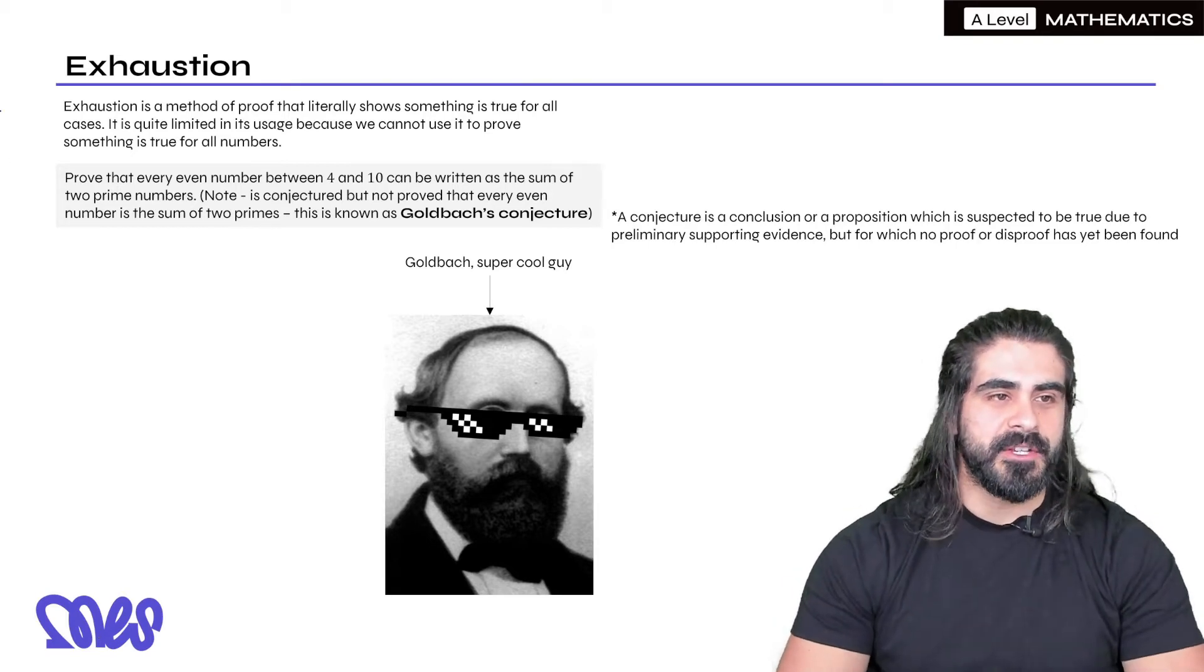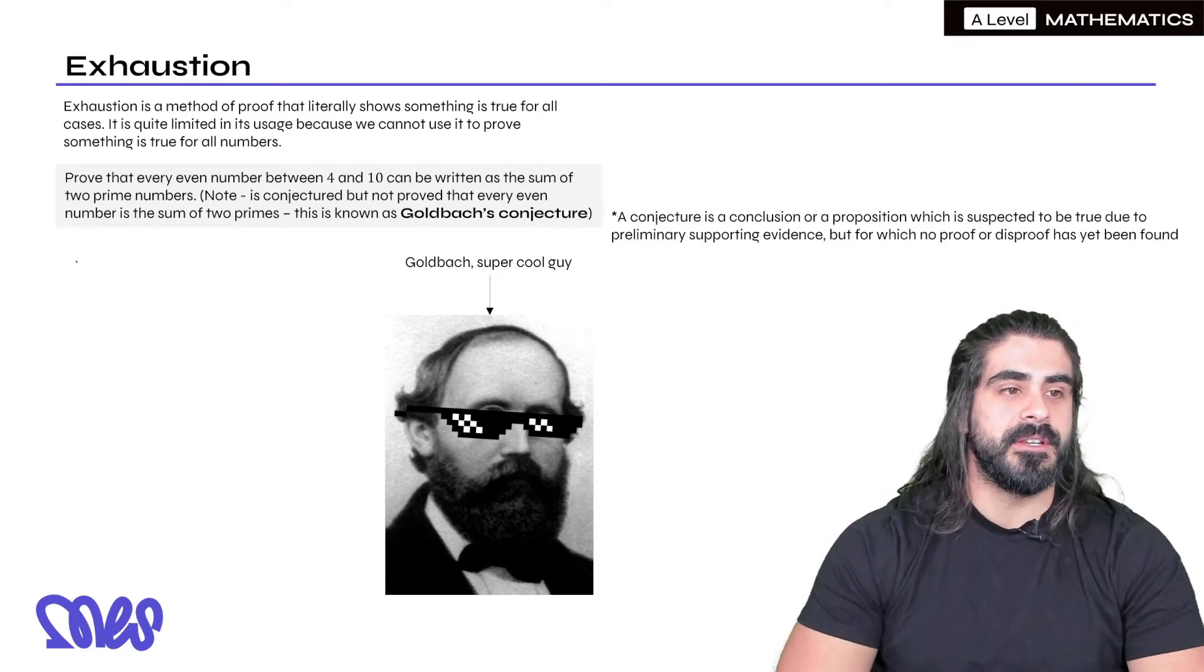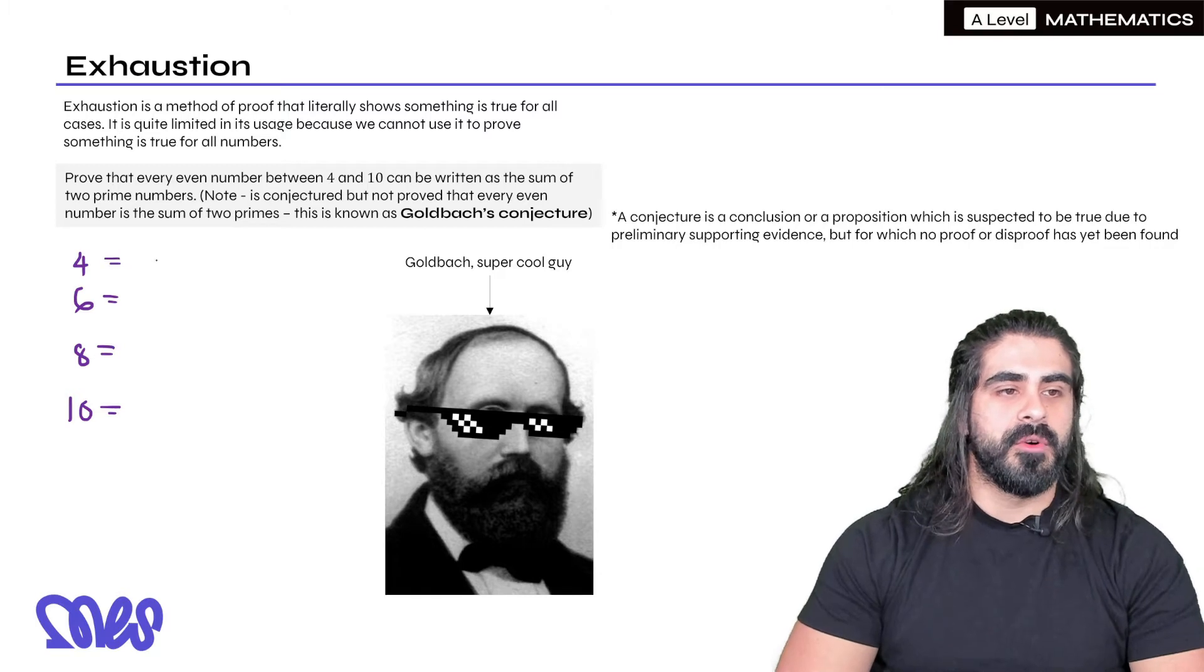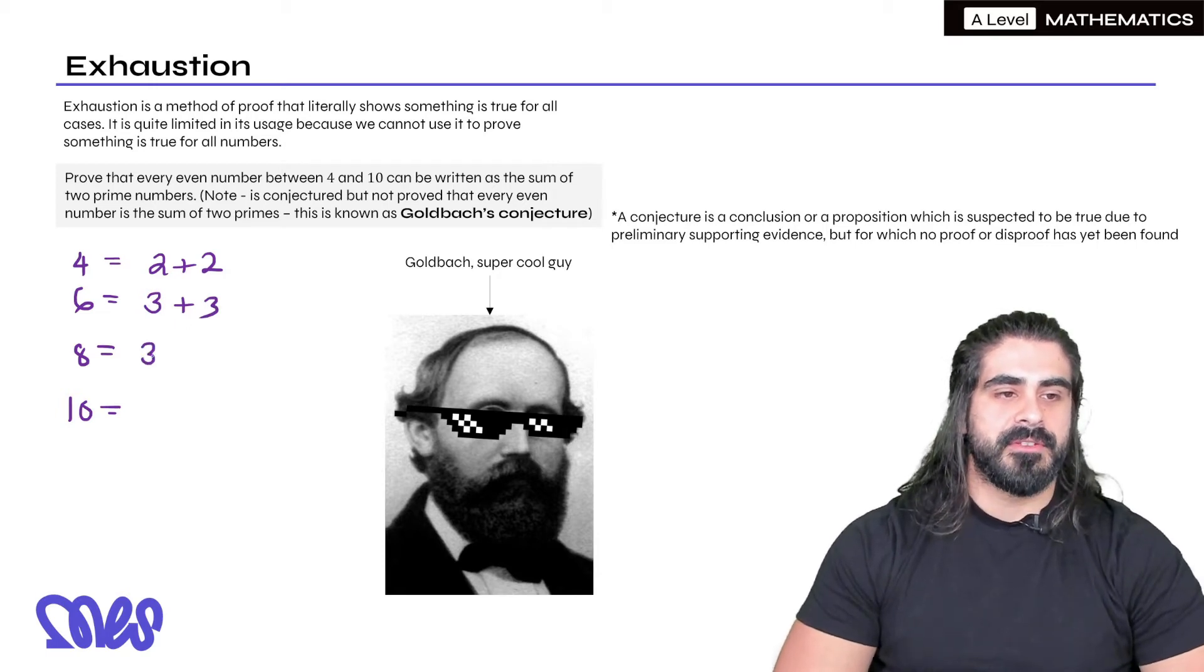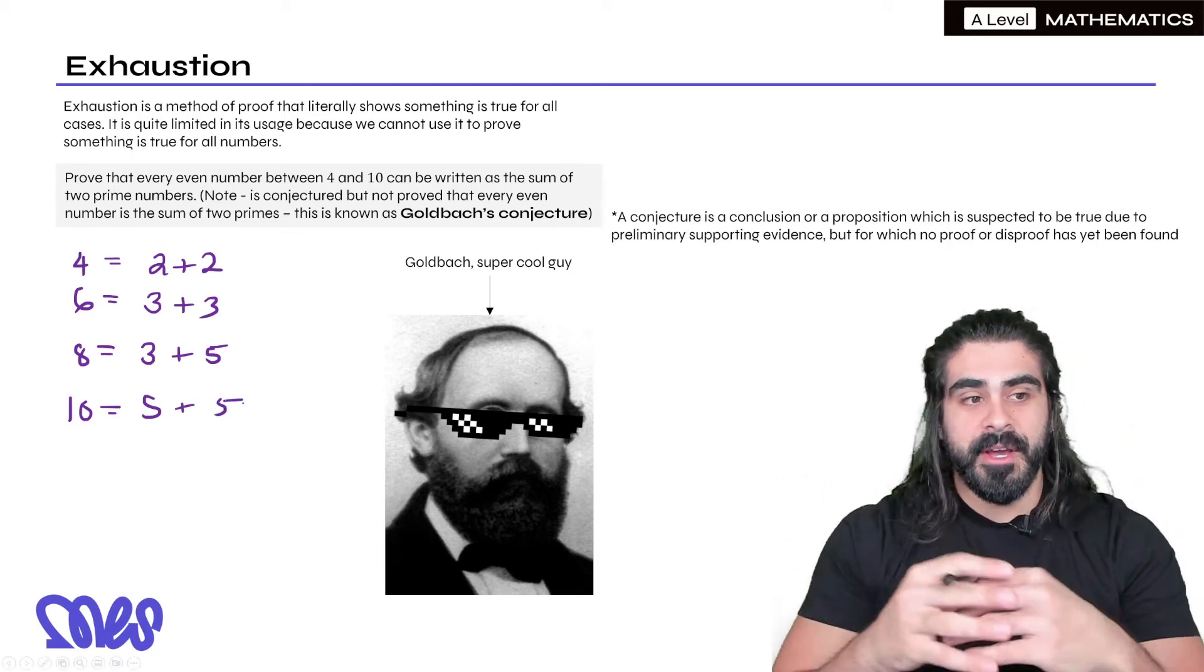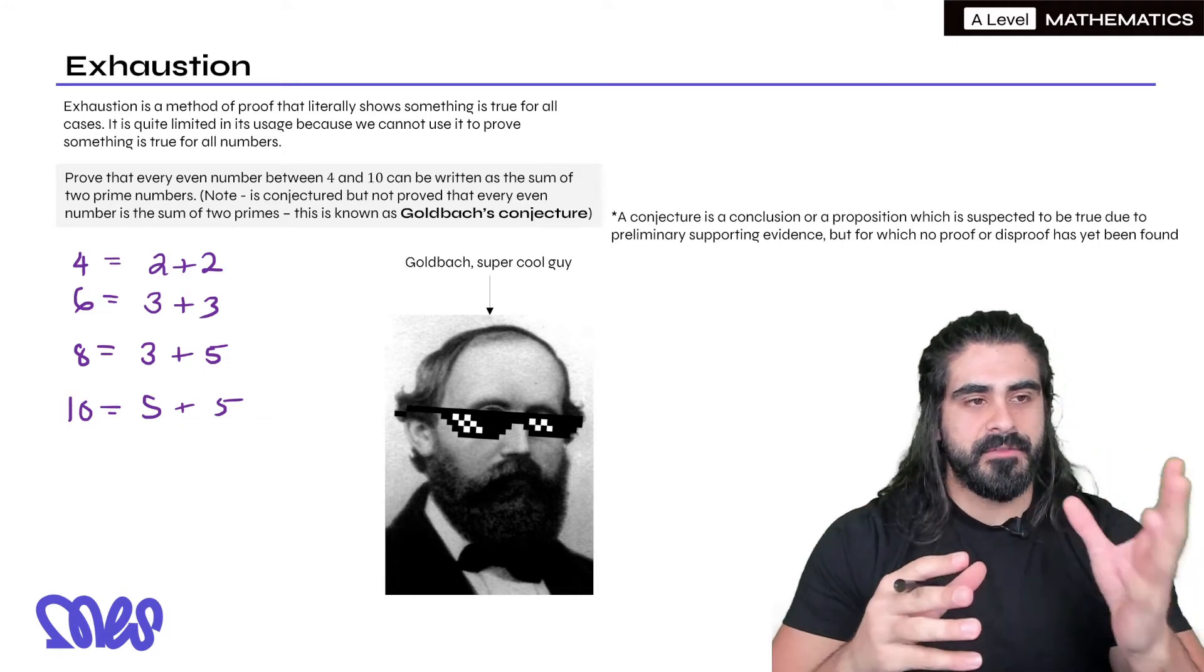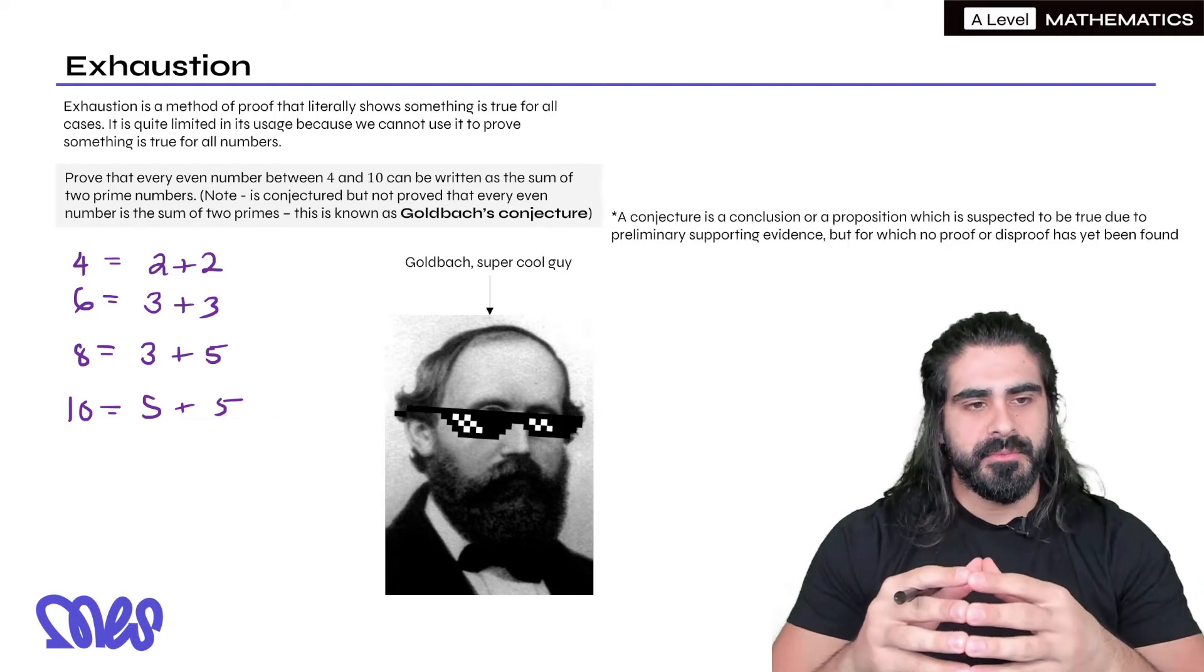So let me just show you by exhaustion how it would work here. Prove that every even number between 4 and 10 can be written as the sum of two primes. Well 4 can be written as 2 plus 2, 6 can be written as 3 plus 3, 8 can be written as 3 plus 5 and 10, 5 plus 5. Now you guys yourself could go ahead and try with all the numbers up to 20. So by exhaustion I've shown that all the even numbers between 4 and 10 can be written as the sum of two primes.